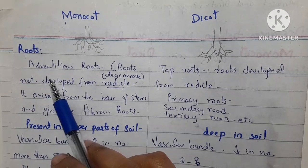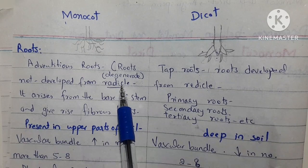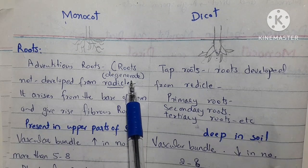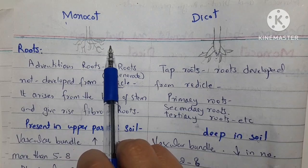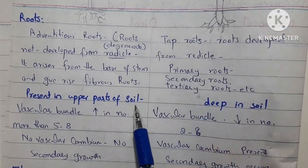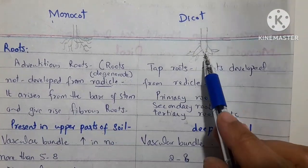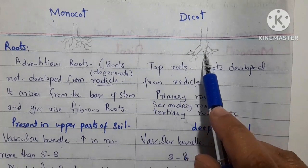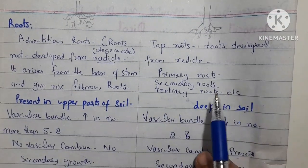Now we look at their roots. In monocot roots, we call them adventitious roots because these roots are not developed from the radicle. The radicle, which is responsible for roots, degenerates in monocot plants. So these roots arise from the stem and are fibrous roots — thread-like and numerous. They are not very deep and are present only in the upper layer of the soil. In case of dicot, they are large roots called tap roots, because these roots are developed from the radicle portion. There is a primary root, then secondary roots, then lateral branches, and then tertiary roots, and so on.